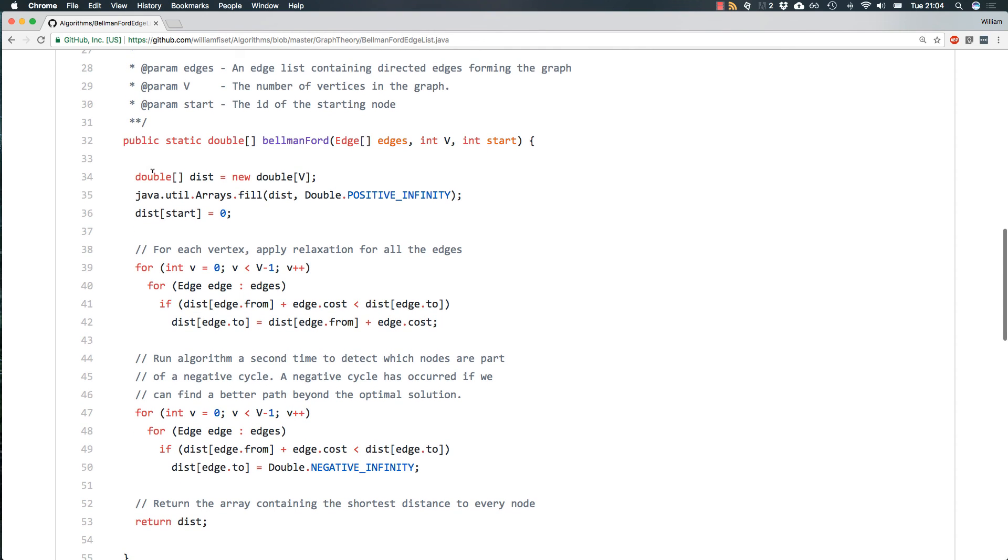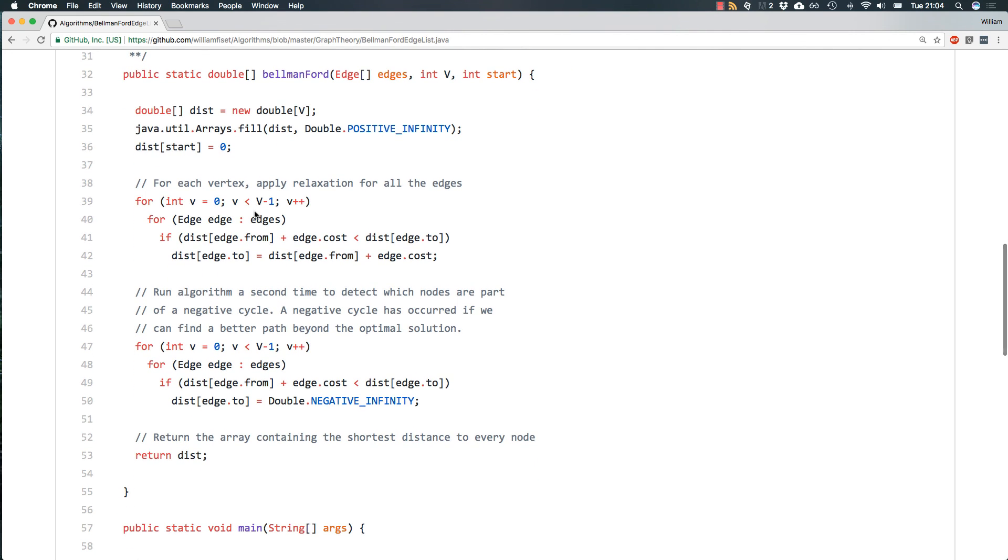All right, so let's initialize the distance array and then populate it with this special value double.POSITIVE_INFINITY, then set dist of start to be zero. And then just as the pseudocode said, just loop V minus 1 times, then for each edge, just relax the edge. So that's what we're doing.